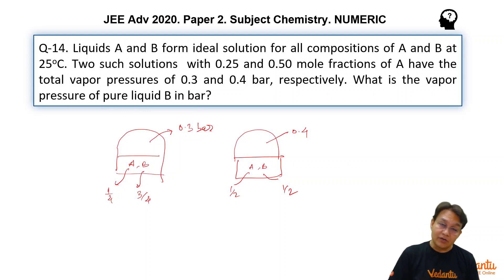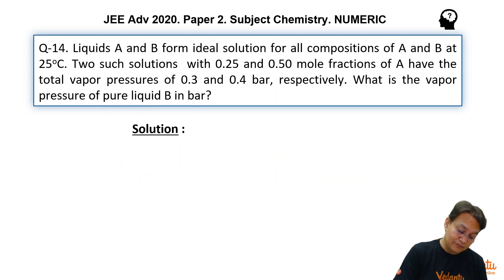Recall the formula for Raoult's Law. The vapor pressure of the solution, p total, is given by p⁰A × xA + p⁰B × xB, where xA + xB equals 1.